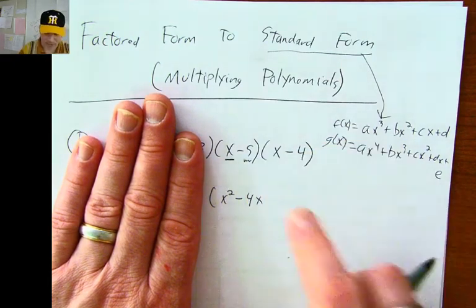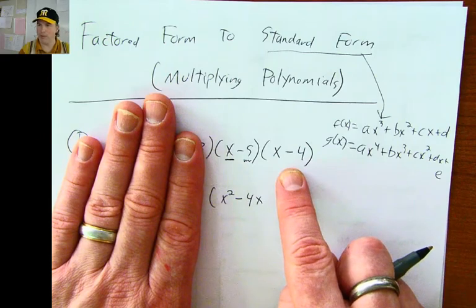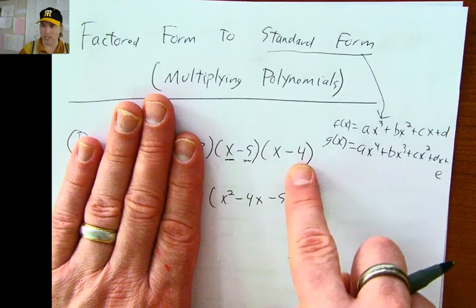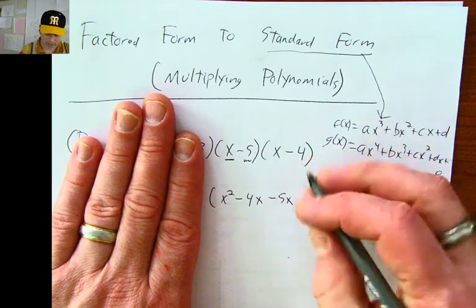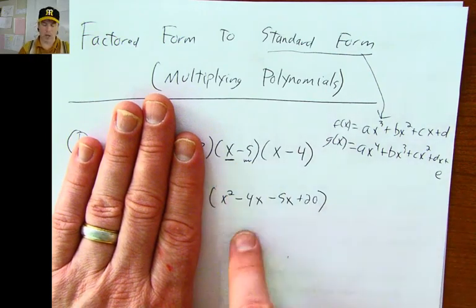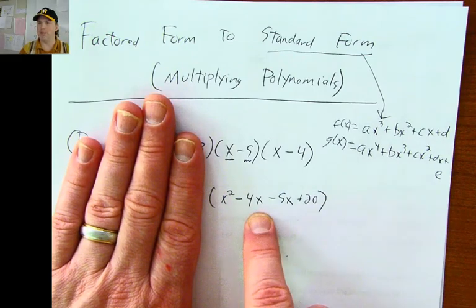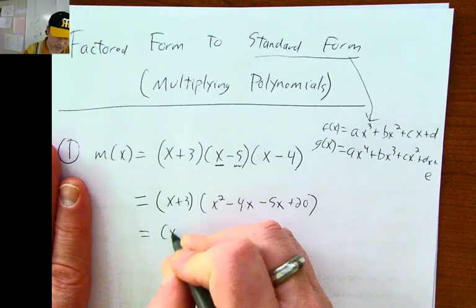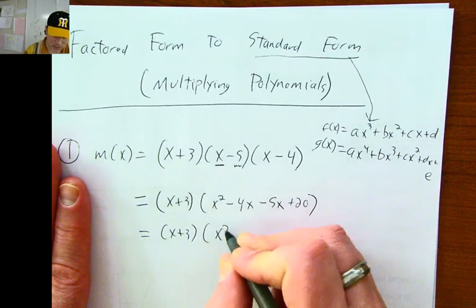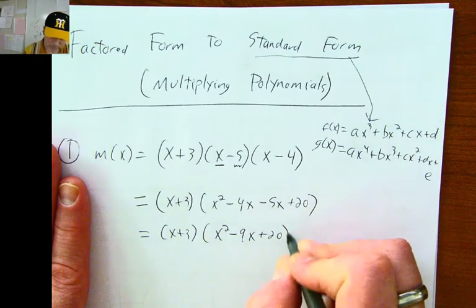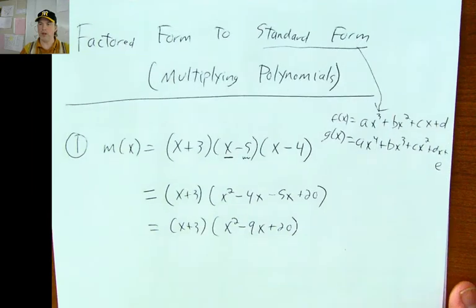Next, I distribute this negative five into x minus four. Negative five times x is negative five x, and negative five times negative four is positive twenty. After you do all of the distributing — the double distributing — there will usually be some like terms to add. In this case, I have negative four x and negative five x, so I have x squared, and these two add up to negative nine x plus twenty.